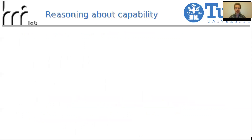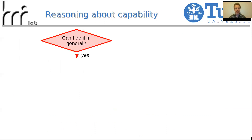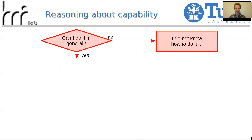When a system gets an instruction, the immediate introspective process needs to look at whether the system is even capable of doing what is being instructed. It has to ask itself: can I do it in general? If it can do it in general, it moves on. If it cannot do it in general, it needs to let the person know — not just do nothing.